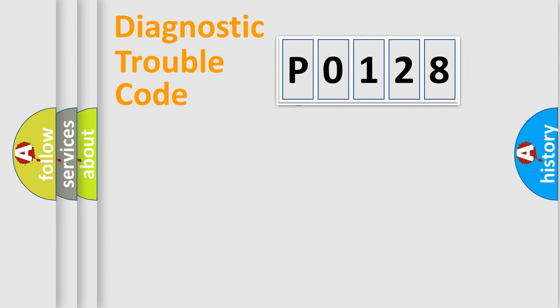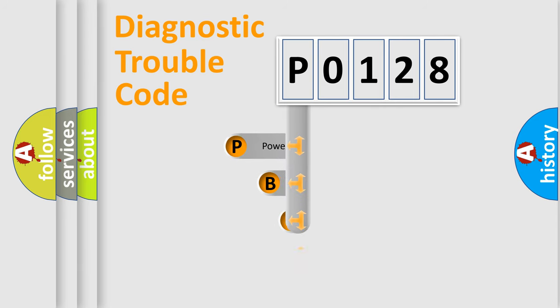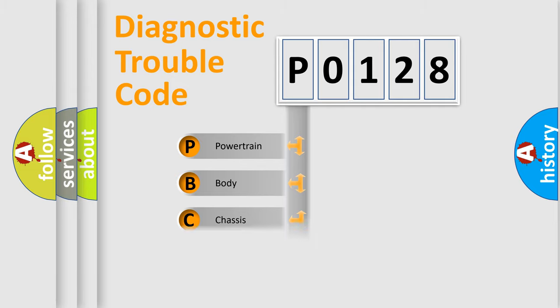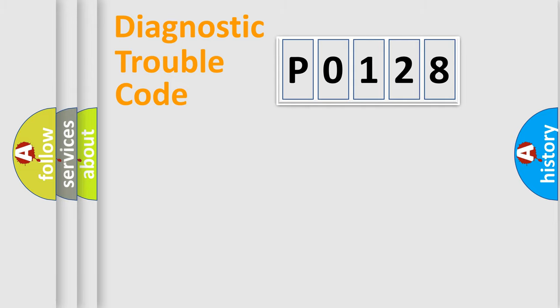Let's look at the history of diagnostic fault code composition according to the OBD2 protocol, which is unified for all automakers since 2000. We divide the electric system of the automobile into four basic units: Powertrain, Body, Chassis, and Network.